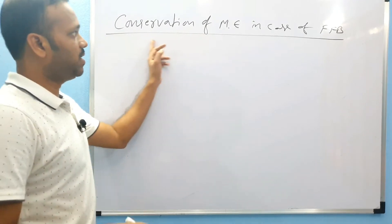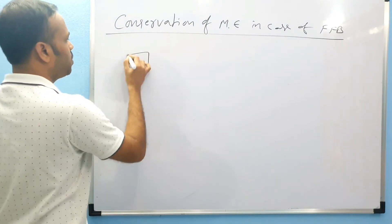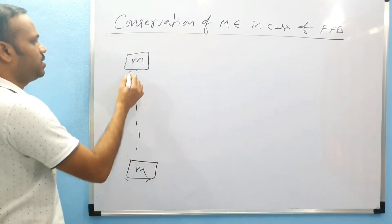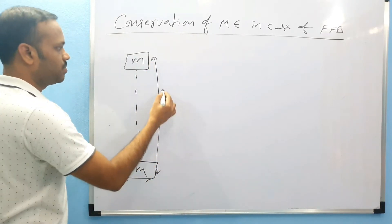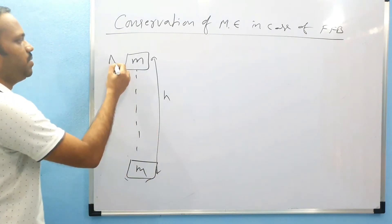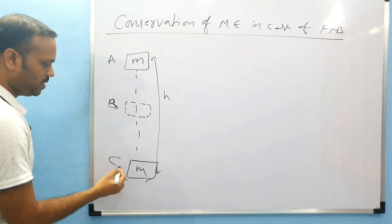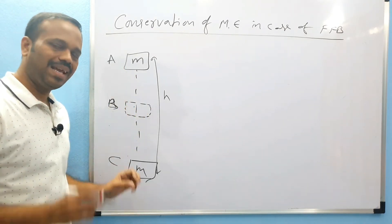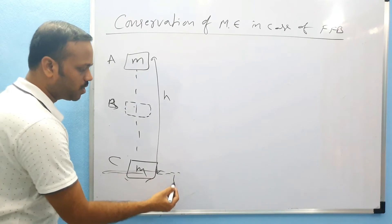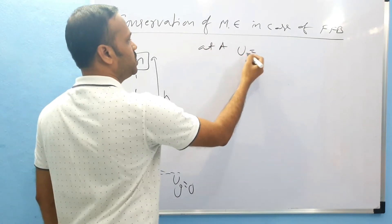Let's see conservation of mechanical energy in the case of a freely falling body. For example, a block of mass m. This is the height h. We have some arbitrary point A, point B, and point C. If you calculate mechanical energy at A, at B, at C, it is the same — mechanical energy is conserved. Here is our ground, and gravitational potential energy at the ground is zero — that is our reference.